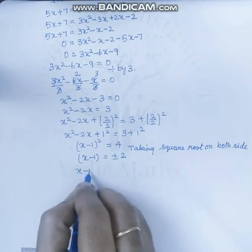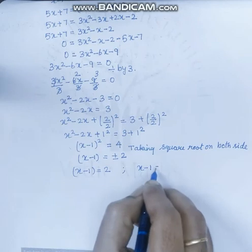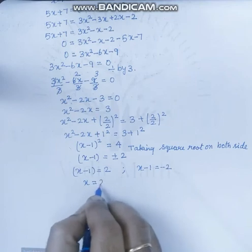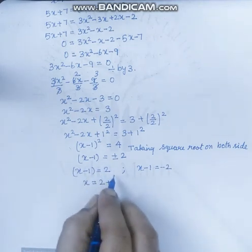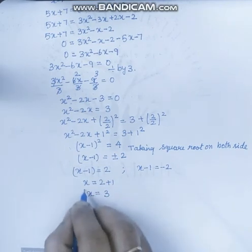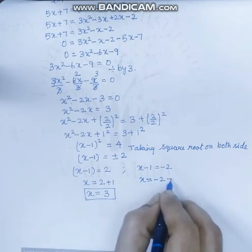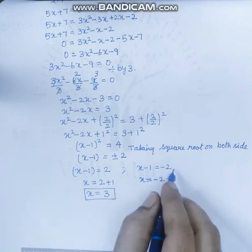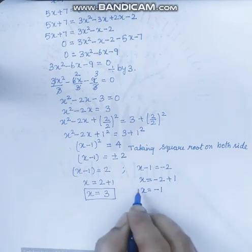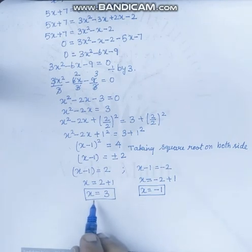So taking the two cases: x minus 1 equals plus 2, which gives x equals 2 plus 1, so x equals 3. And x minus 1 equals minus 2, which gives x equals minus 2 plus 1, so x equals minus 1. Therefore, the two values of x are 3 and minus 1.